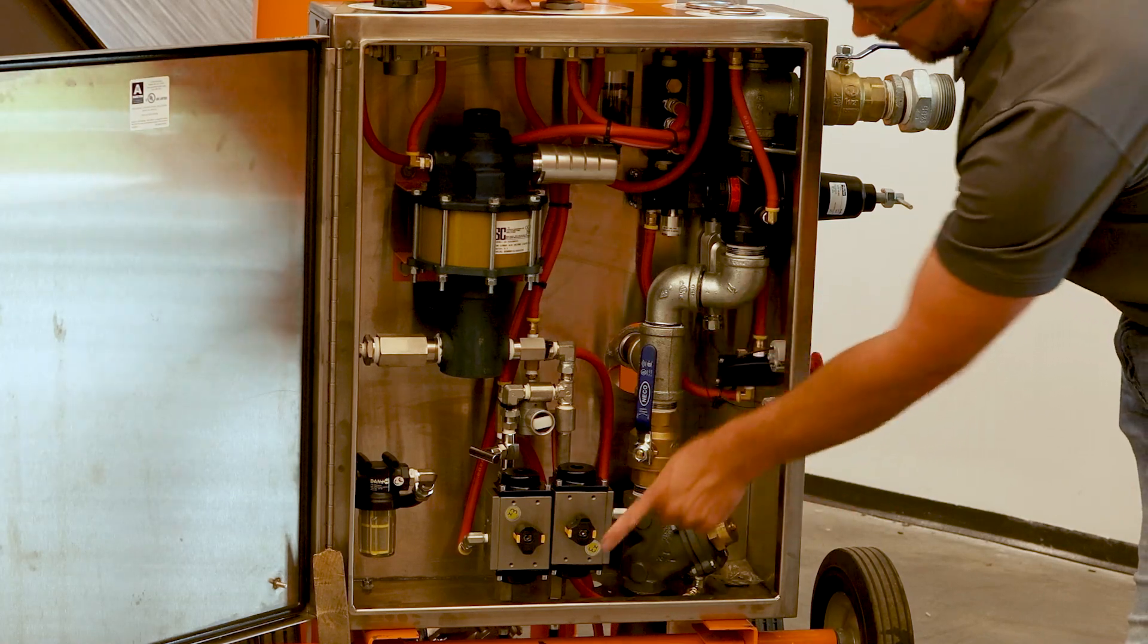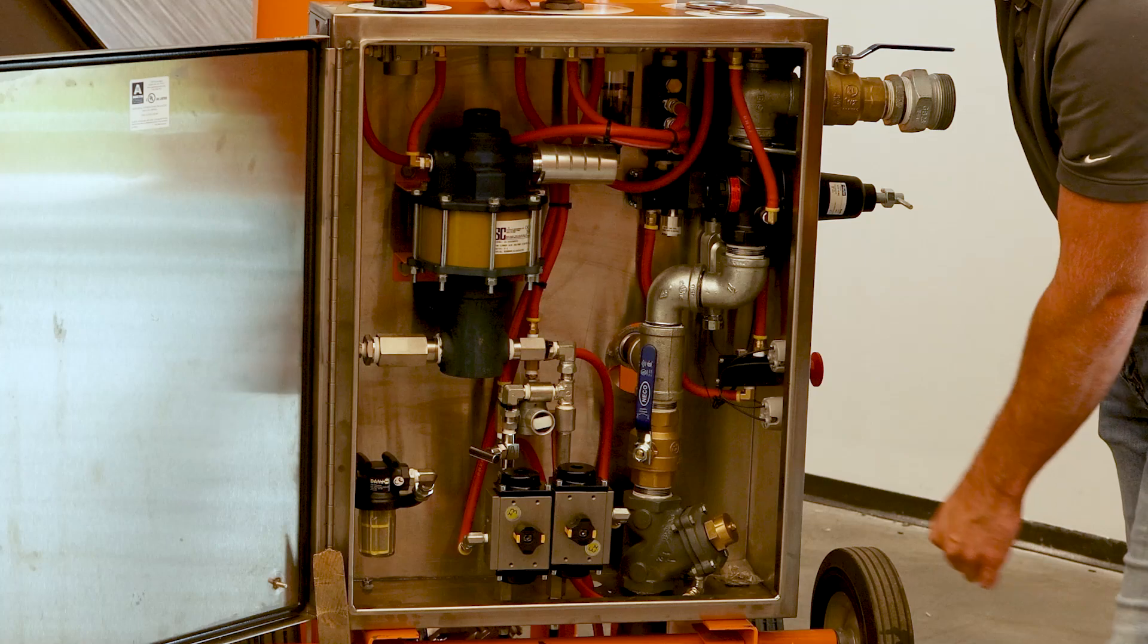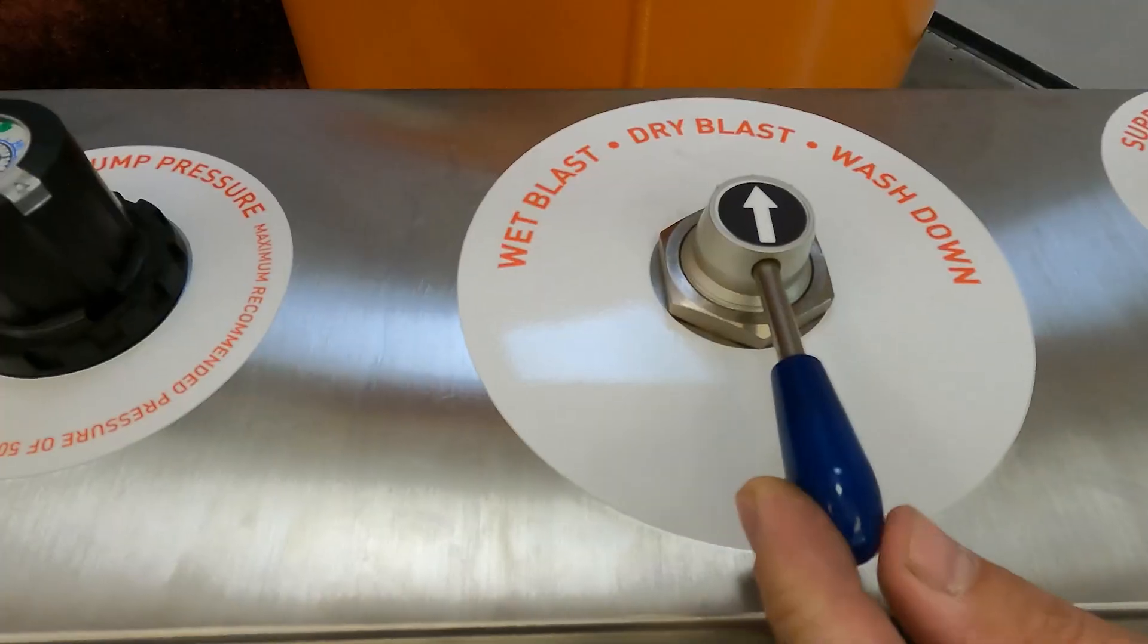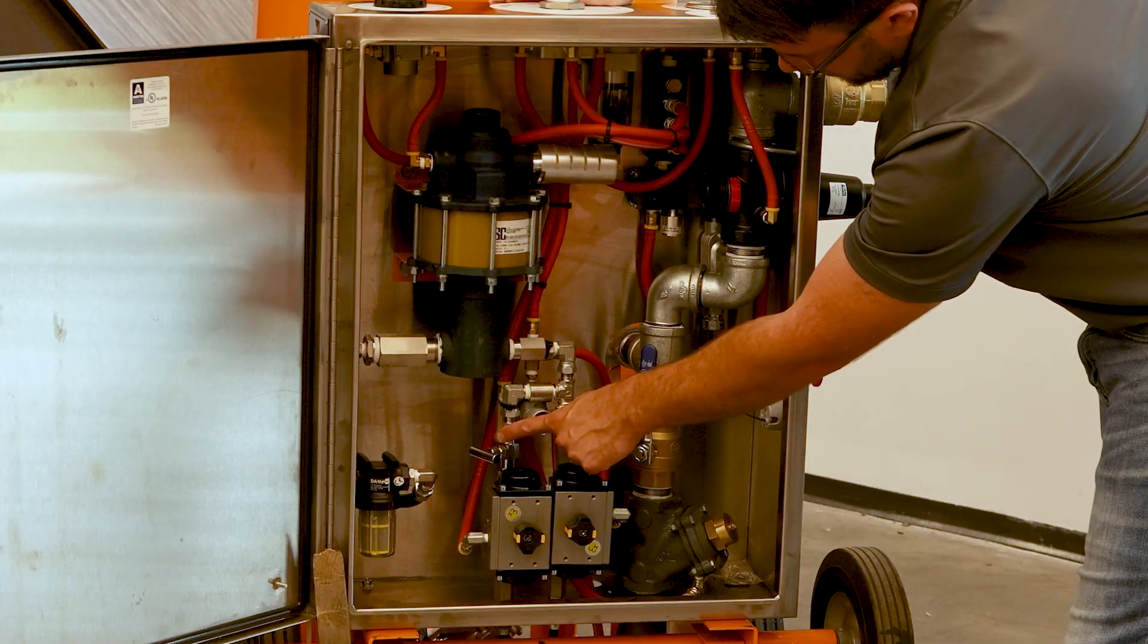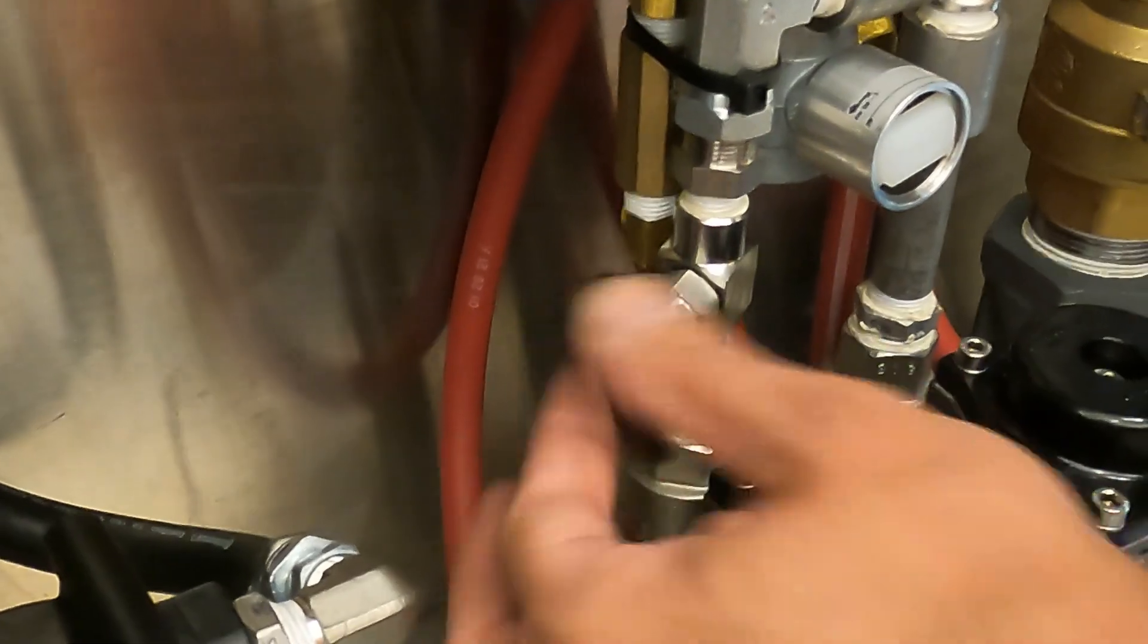So if you would hit the trigger right now, this ball valve would open and it would allow this pump to push water through the injection block. And in the mist blast, it actually signals this air actuated ball valve and you have a needle valve here to adjust how much water flow you're using in the field.